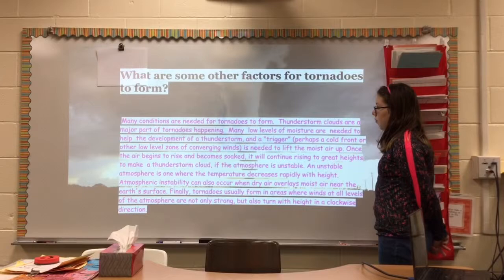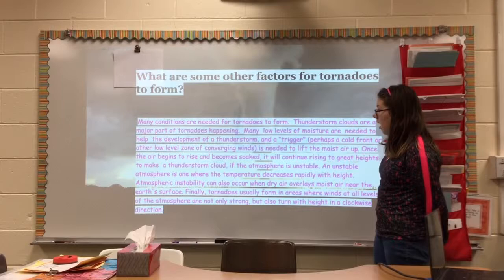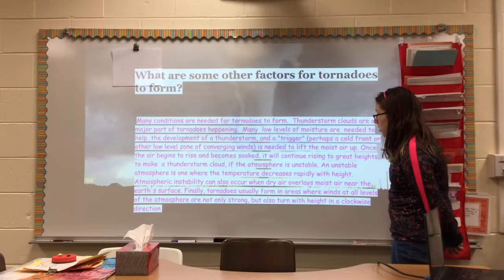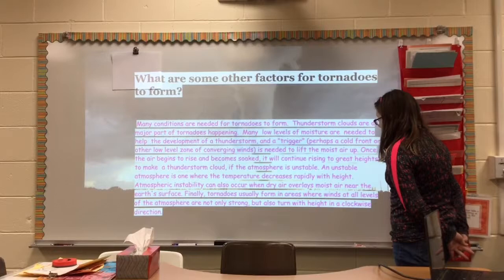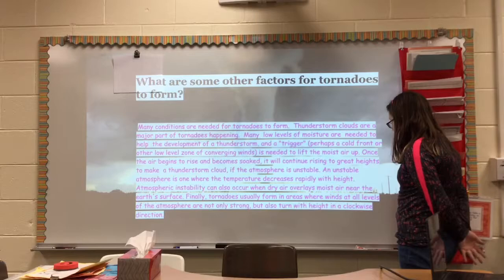Once the air begins to rise and becomes strong, it may continue rising to a great height to make a thunderstorm cloud, if the atmosphere is unstable. An unstable atmosphere is one where the temperature decreases rapidly with height, and also occurs when dry air overlays moist air near the earth's surface.